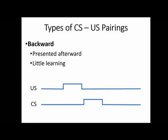Finally, we have backward pairings — the unconditioned stimulus comes first and then the conditioned stimulus. So you give the dog the plate of food and then you ring the bell. This is the worst way for learning to happen. You will see very little learning here because once they've gotten the food and reacted to the unconditioned stimulus, it's very difficult to go backwards and associate that with something that already happened.